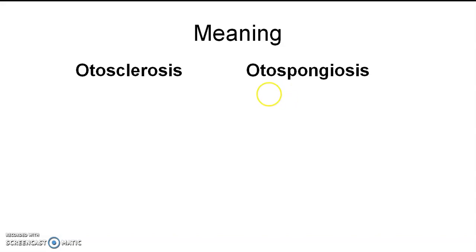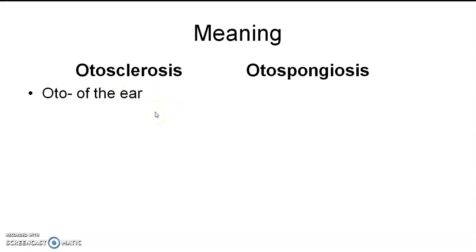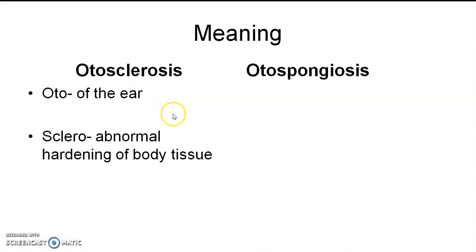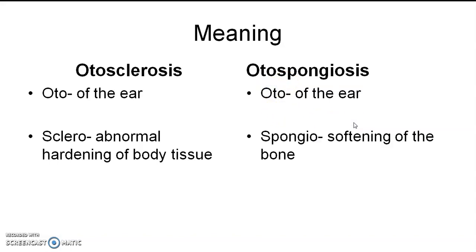Otosclerosis is also referred to as otospongiosis. 'Oto' refers to of the ear — any condition affecting the ear. Sclerosis means abnormal hardening of the body tissue; in this scenario, it is the inner ear tissue which is getting abnormally hardened. Spongiosis means softening of the bony tissue. Before it becomes completely hardened, it will be like a soft vascular tissue, hence it is also called otospongiosis.